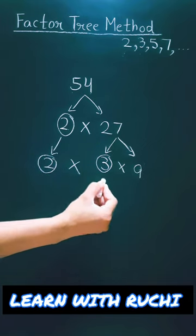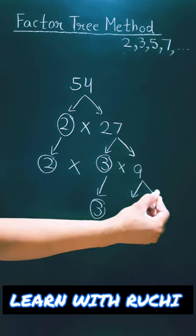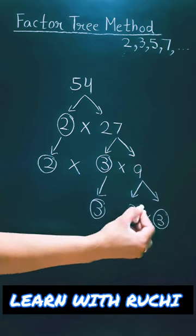2 will carry 2. Now 3 will carry 3. Now 9 will reduce. 3 into 3, 3 times 3 is 9.